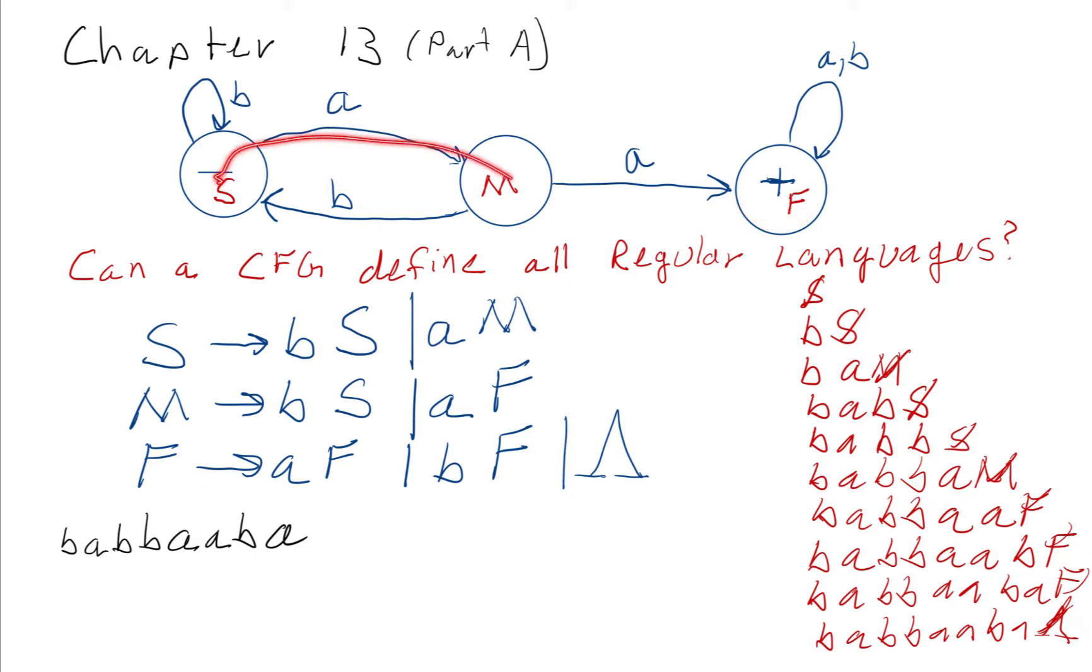Basically, the same path that we would have taken through this finite automata is listed out through all these non-terminals that we replaced as we generated the word.